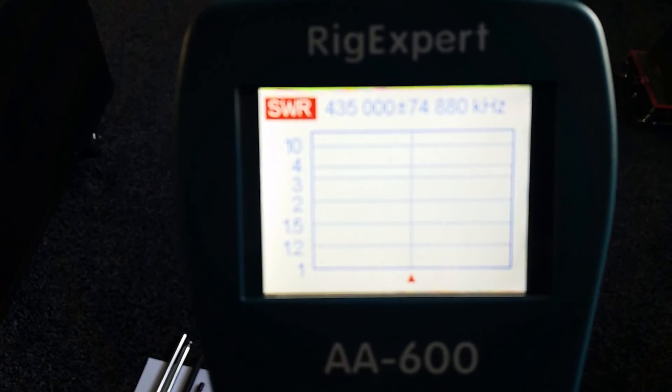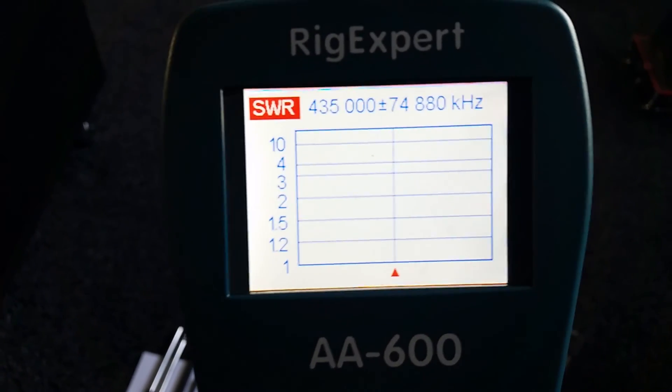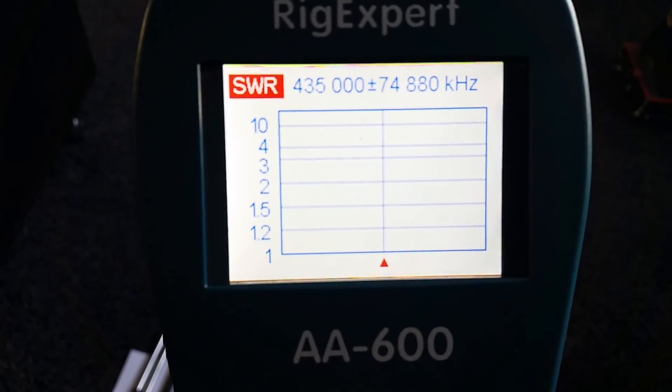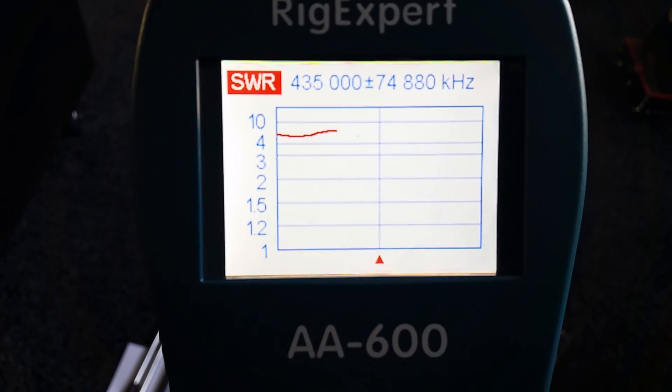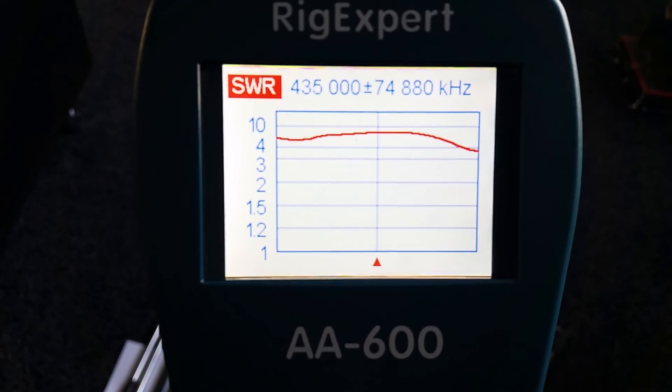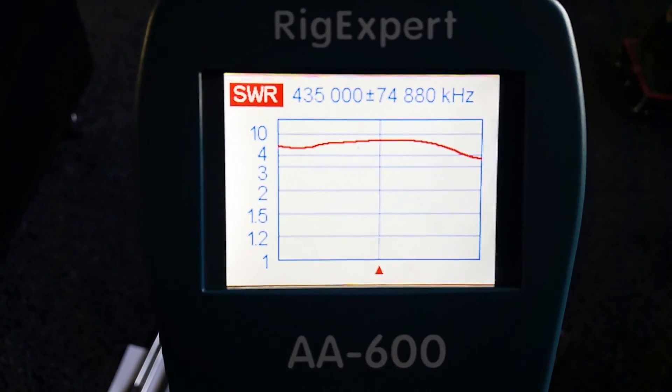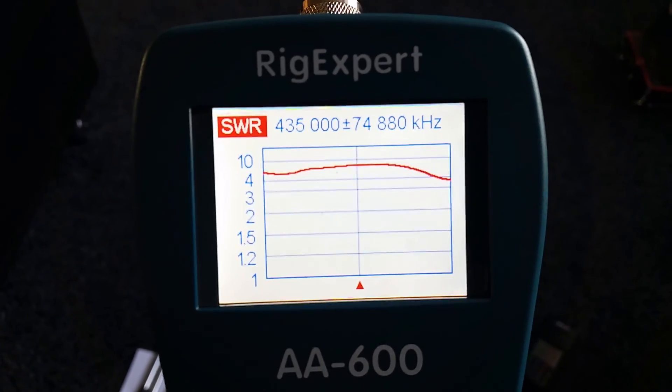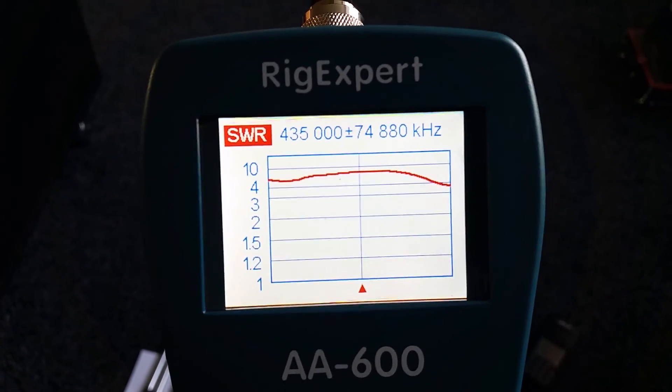Now we're back to the Yaesu antenna, and we're on 435 as a center frequency. So that just shows you these antennas at these frequencies aren't very efficient.